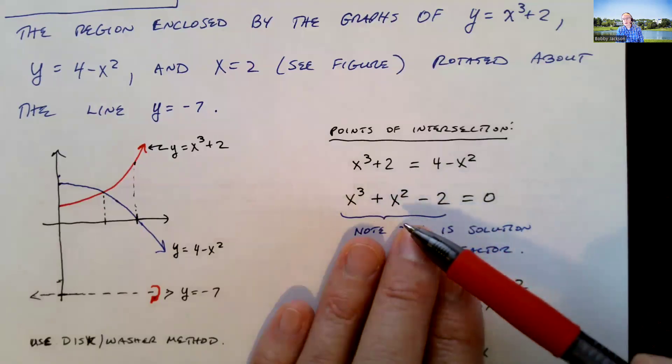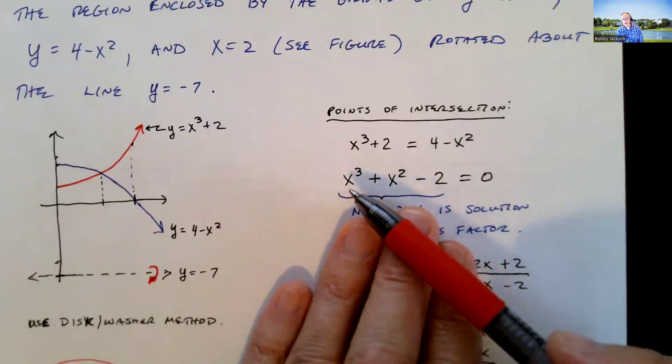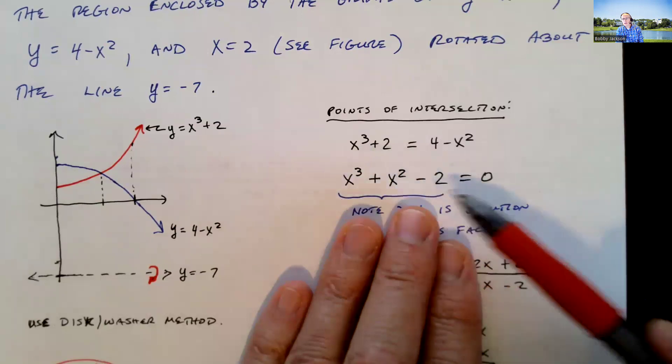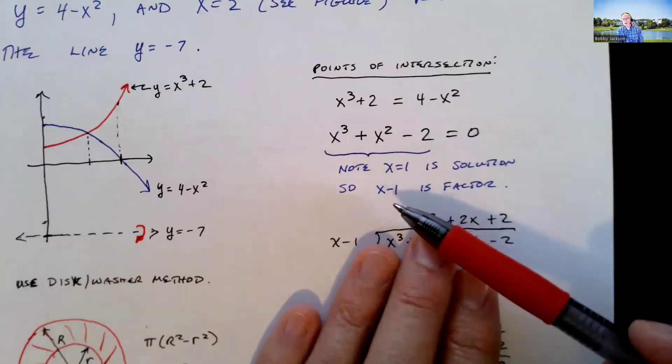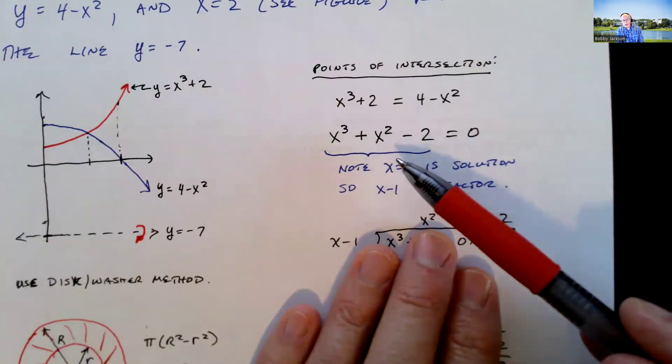If you check all those options, you do actually get a rational root, and that is 1. Because if I let x be 1, what do I get? 1 cubed plus 1 squared, that's 1 plus 1 is 2 minus 2 is 0. So 1 is a solution, which means x minus 1 is a factor. So I can factor this.